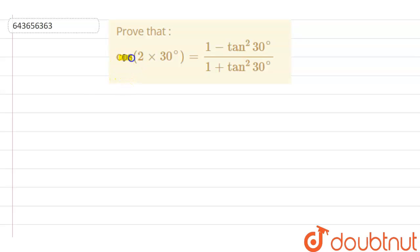Here the question is: prove that cos(2×30°) = (1-tan²30°)/(1+tan²30°).